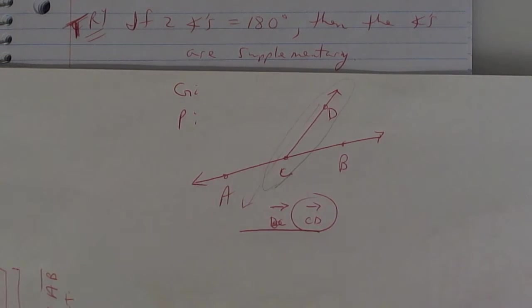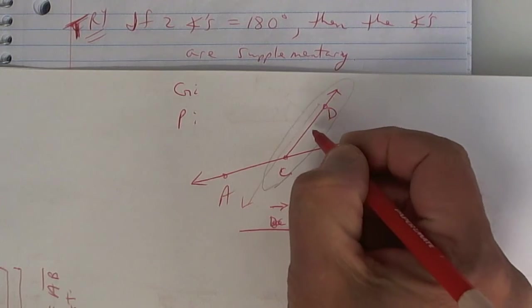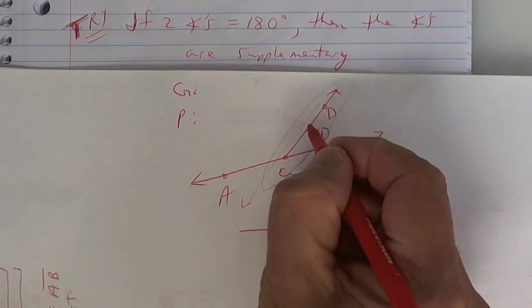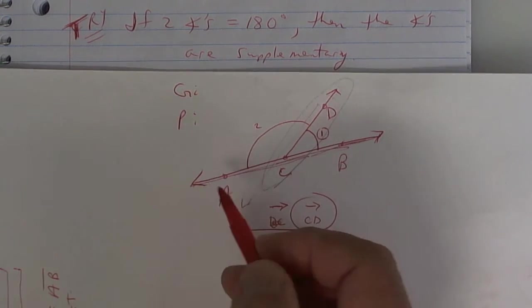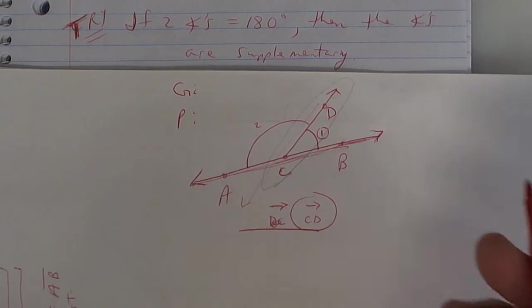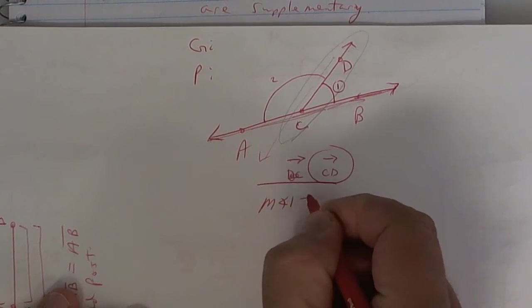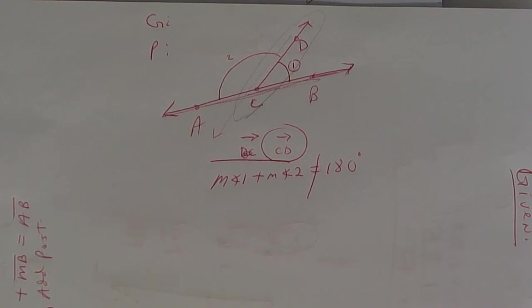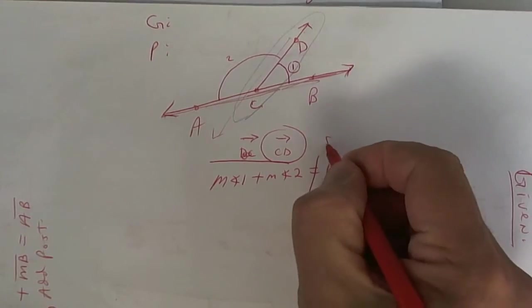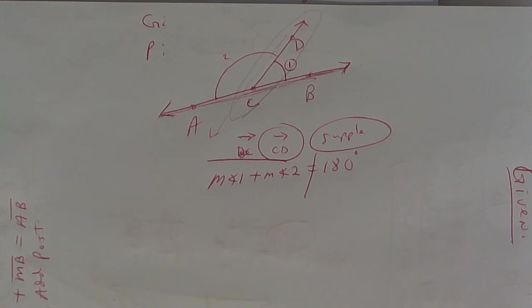Now, watch this. If I add this one, angle one, plus this one, angle two, I get a straight line. Does anybody know how many degrees a straight line is? One hundred and eighty. So, write this down. The measure of angle one, plus the measure of angle two, has to add up to one hundred and eighty degrees. Now, if it adds up to one hundred and eighty degrees, is it complementary, or is it supplementary? It's supplementary. So, put supplementary. Make sure you know the difference. Complementary adds up to how much? And supplementary adds up to? All right. Some of you got this right away.